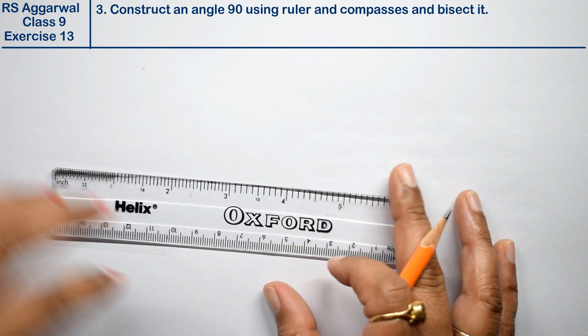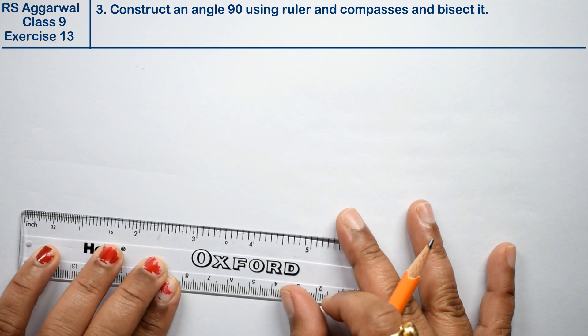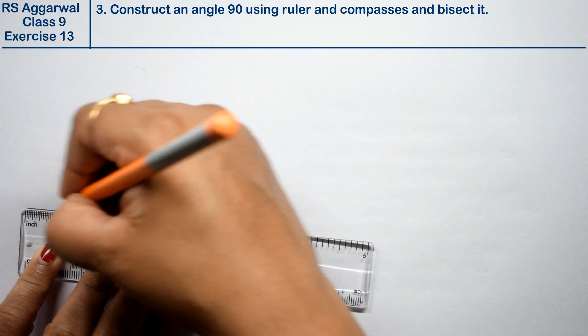Friends, 90 degree angle. How do we do this? We have not been given this line, so we will make a line of any measurement.